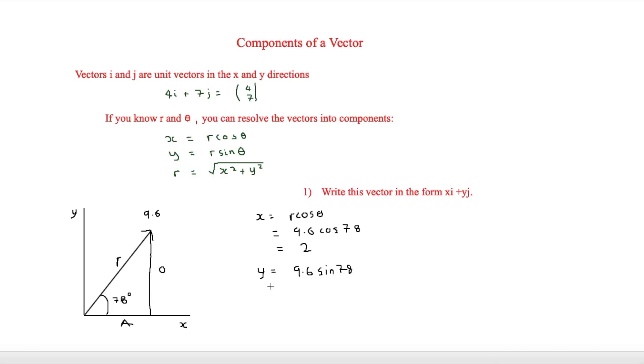And then this is going to be equal to 9.39. Now we still haven't finished as we have to write this vector in the form xi plus yj. And this is what we are looking at here. And that would be 2i as x is 2 plus 9.39j.